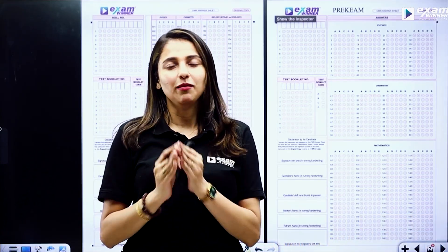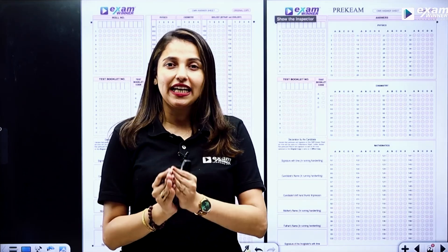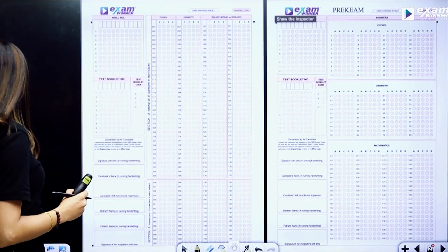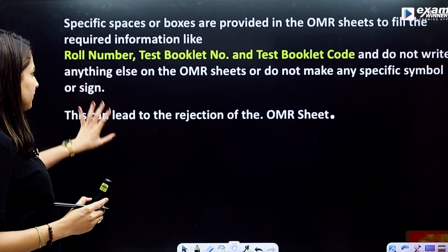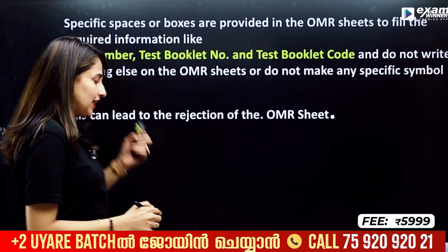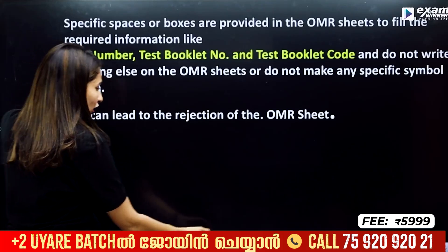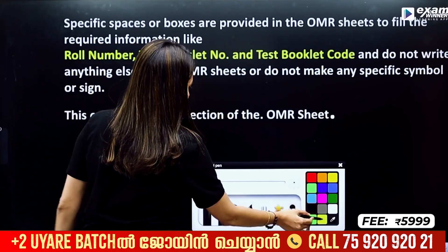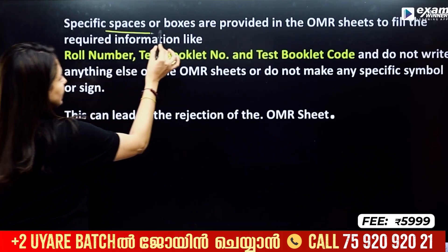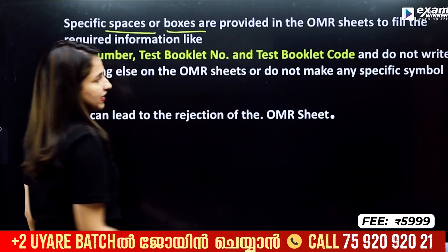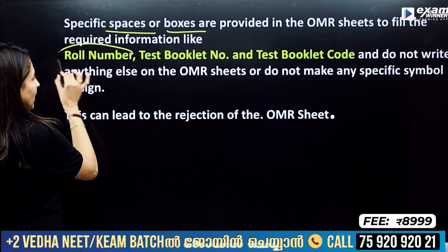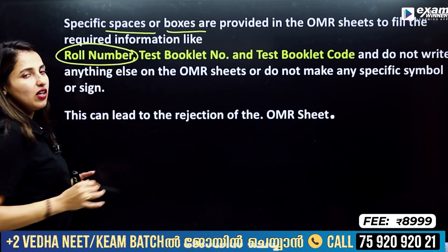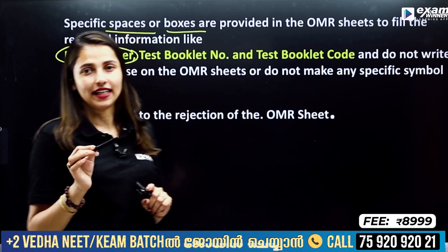This is correct. Let me show you how to fill the OMR sheet. Check the separate papers first, and if you check the same thing, you can fill in the OMR sheet. The OMR sheet has specific boxes to fill in. The first box is for the roll number.